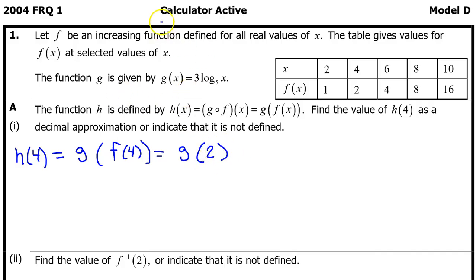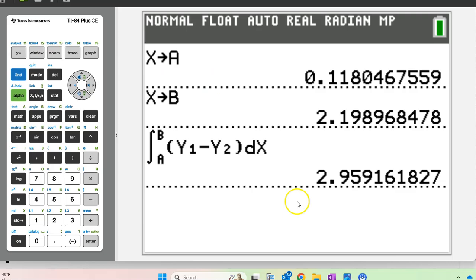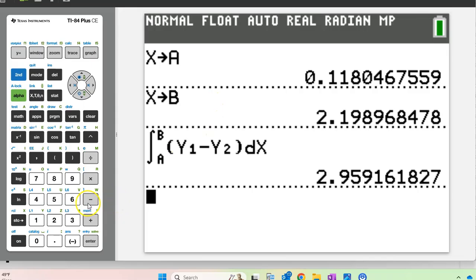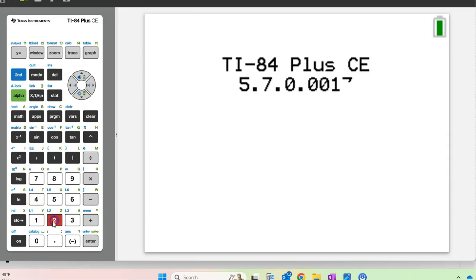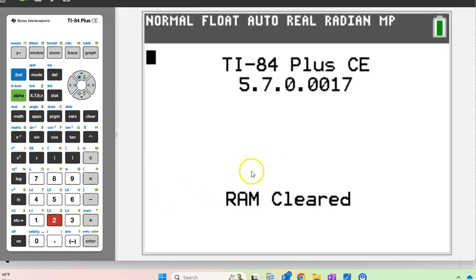This problem is calculator active, so let's use the graphing calculator to evaluate g at 2. Always reset your calculator at the beginning of a problem by hitting 2nd plus 7, 1, 2. That's 2nd plus 7, 1, 2. Ta-da! Fresh calculator.